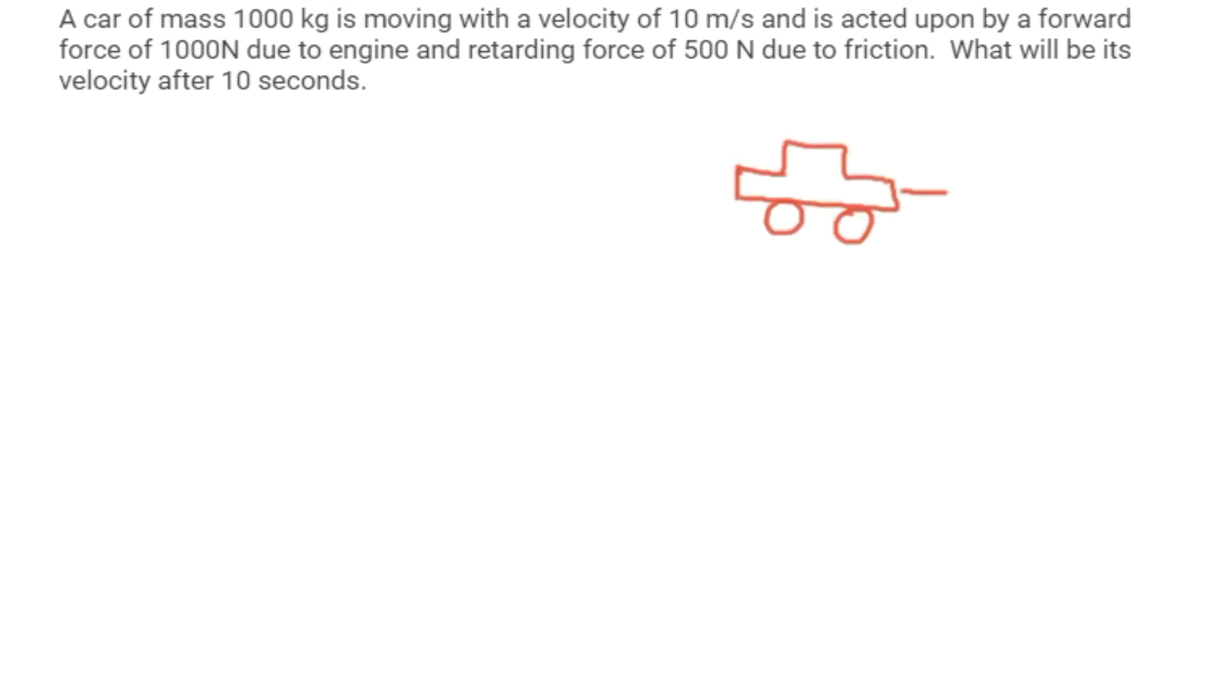Take a car that is moving with a velocity of 10 m per second, acted upon by a forward force because of the engine that is equal to 1000 N, and a friction force acting in the opposite direction of 500 N. What will be its velocity after 10 seconds from this moment? That we have to calculate.